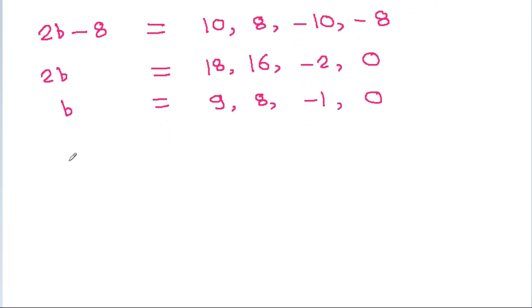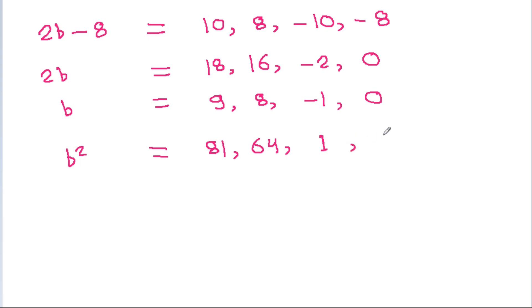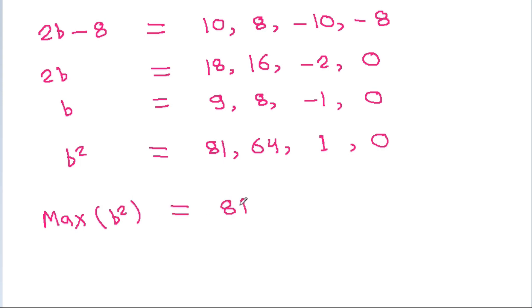So b squared will be equal to 81, 64, 1, and 0. Therefore the maximum value of b squared is 81.